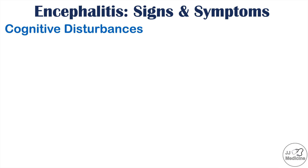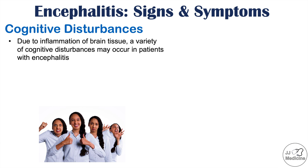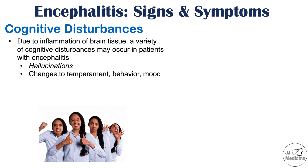Due to continuing inflammation of brain tissue, there are other cognitive disturbances that depend on which part of the brain is more inflamed. These include hallucinations, changes to temperament, behavior, and mood — the patient's family may notice their loved one is not the same person. The patient can be disoriented, not knowing their name, where they are, or what the date is, along with general cognitive decline.